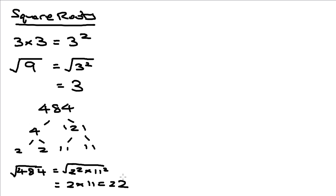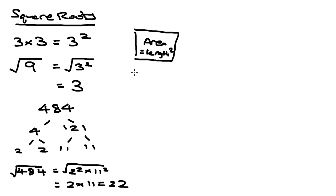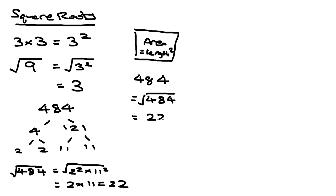This can be used to calculate the length of a square when you're given its area. Because for a square the lengths are all the same, the area is essentially the square of the length. So if a question asks you to find the length and gives you the area — for example 484 — all you have to do is square root that number, and the length of the square is 22 cm.